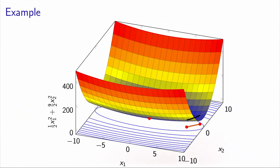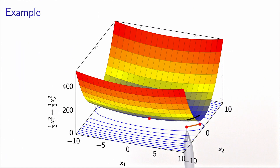We calculate the steepest descent direction, which is represented here by this direction, and we follow it until the function starts increasing again. We follow the function as it goes down, and then starting from a certain point it will go up. So this is the minimum of the function along this direction — what we called Cauchy's point in a previous video. We keep this point as the next iterate and start again. To see what really happens, I will zoom in a little bit.